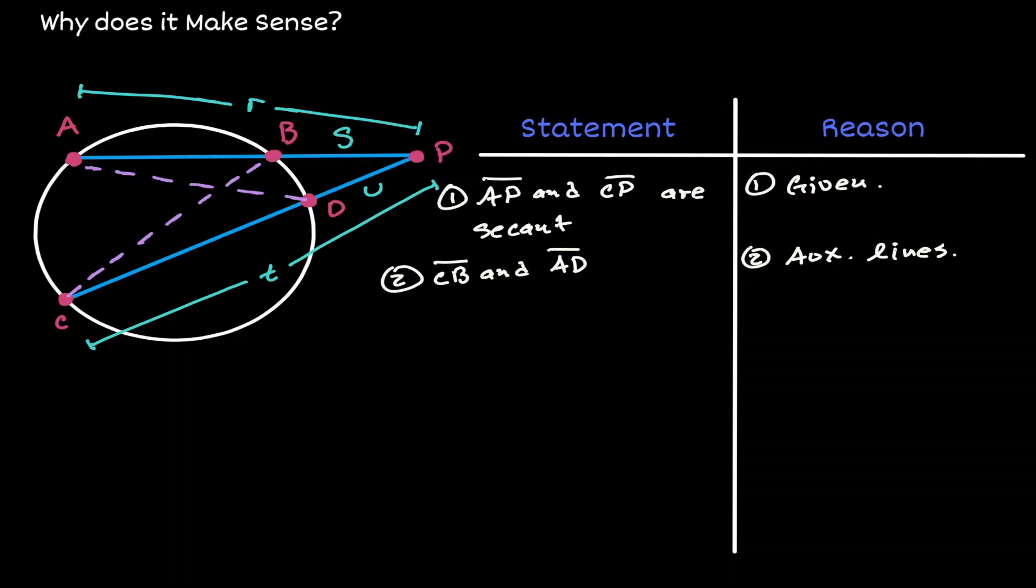When line segment AD was introduced, it forms an inscribed angle intersecting arc BD. Angle C can also be seen as an inscribed angle which is also intersecting arc BD. Because those two inscribed angles are intersecting the same arc, we can say that they're congruent.